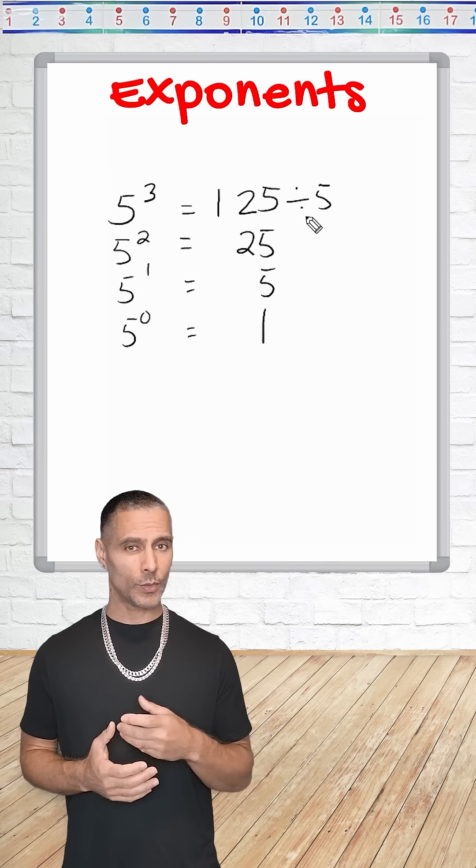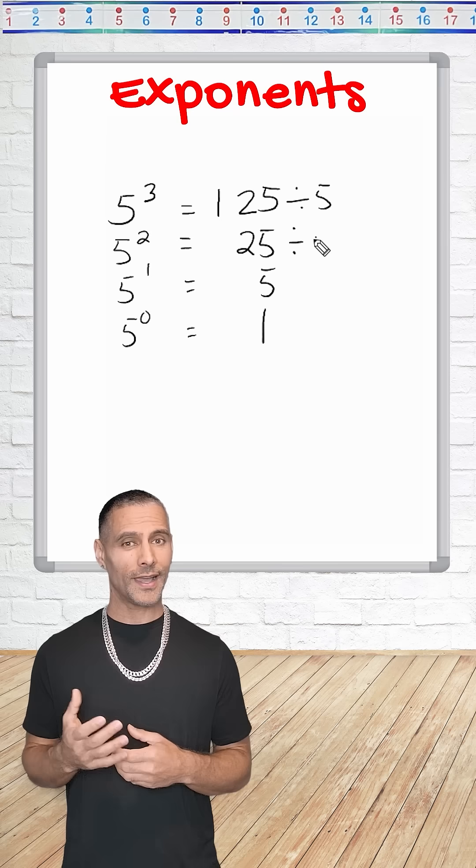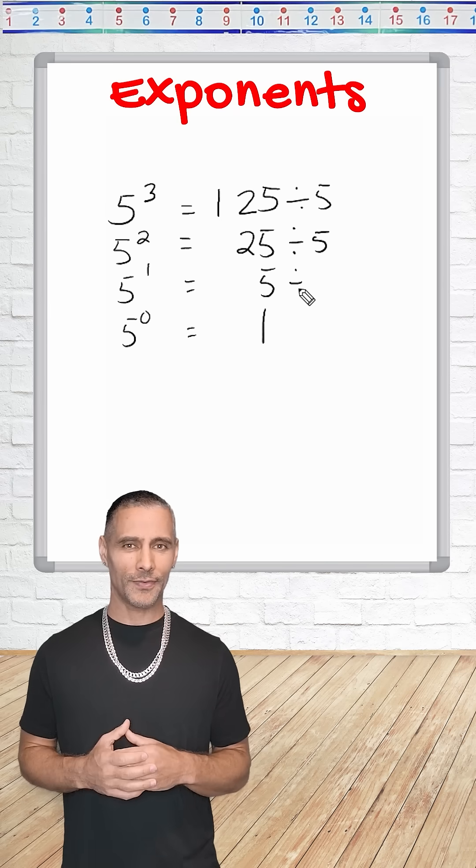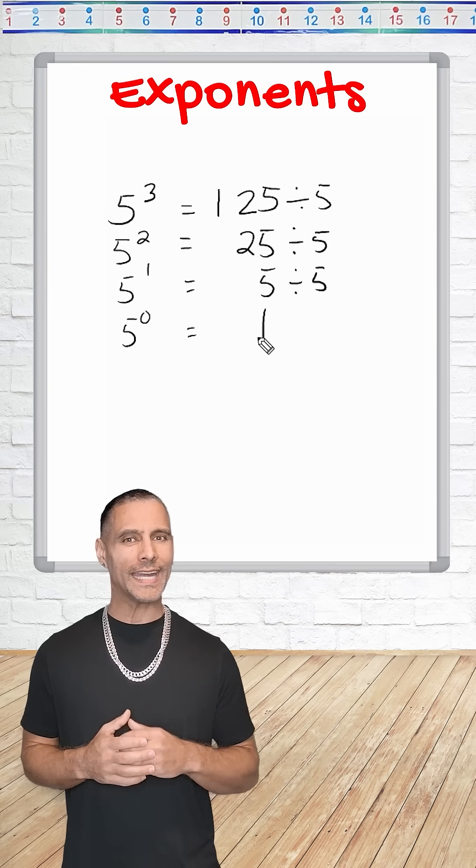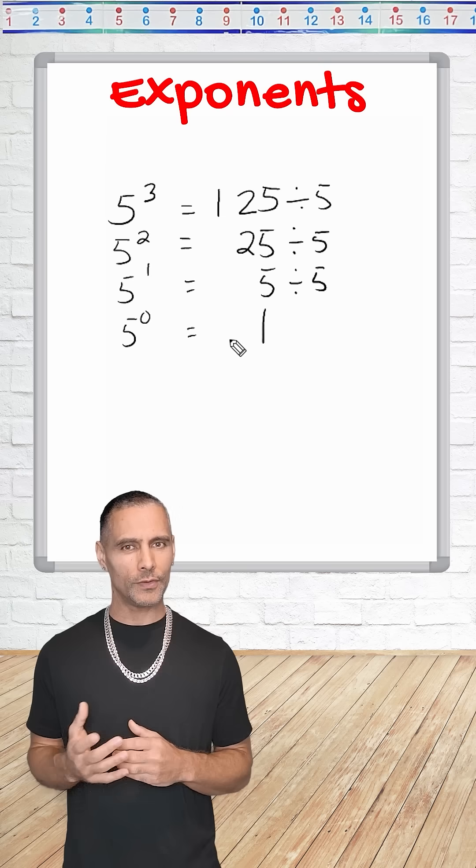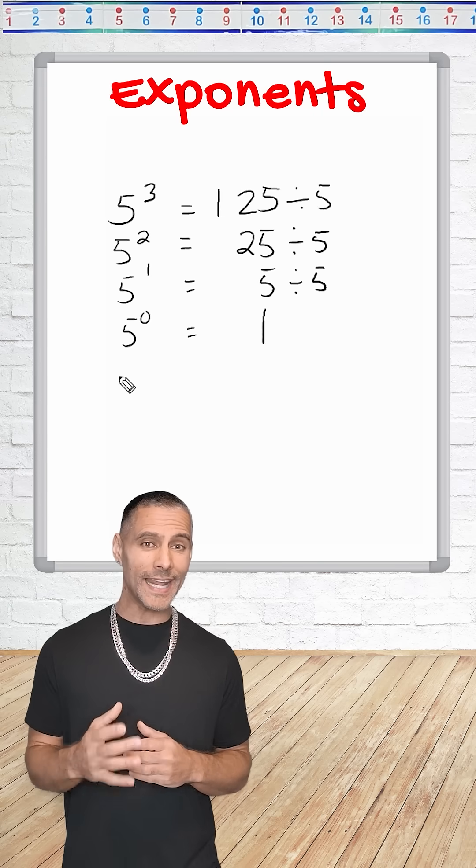125 divided by 5 is 25. 25 divided by 5 is 5. 5 divided by 5 is 1. Since reducing an exponent is like moving backward through division, let's keep going into negative exponents.